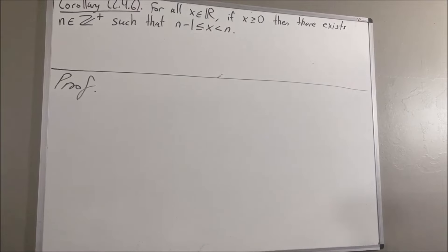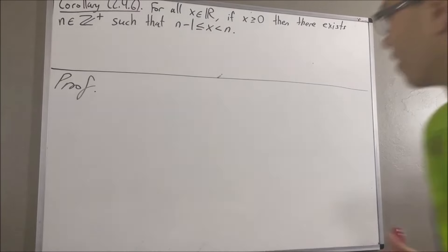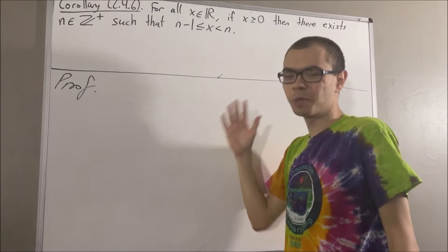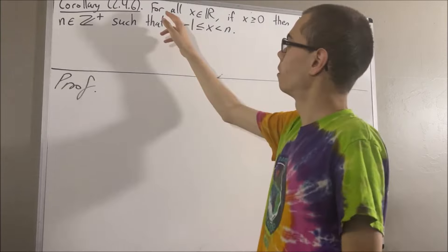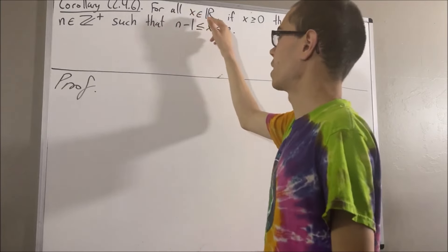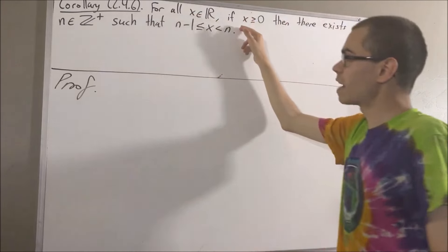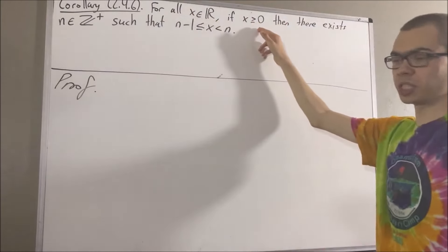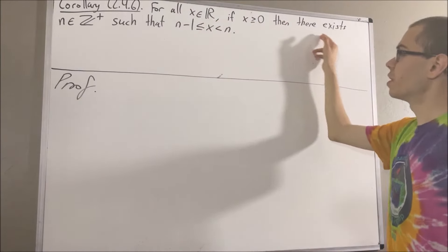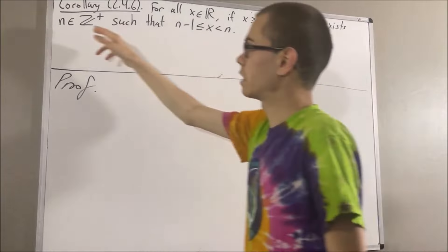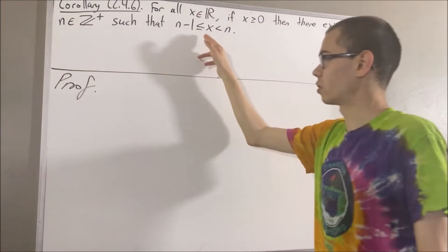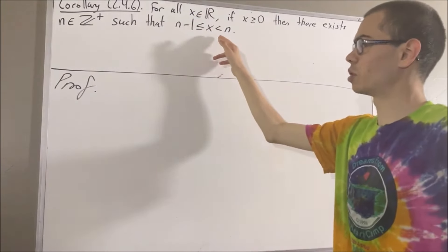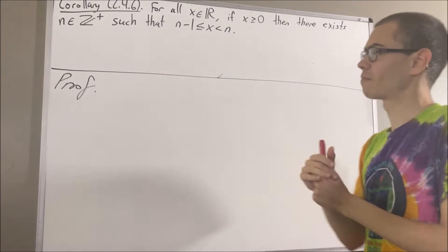Hello! In this video, we are going to prove the following corollary. For all real numbers x, if x is greater than or equal to 0, then there exists a positive integer n such that n minus 1 is less than or equal to x, which is less than n.